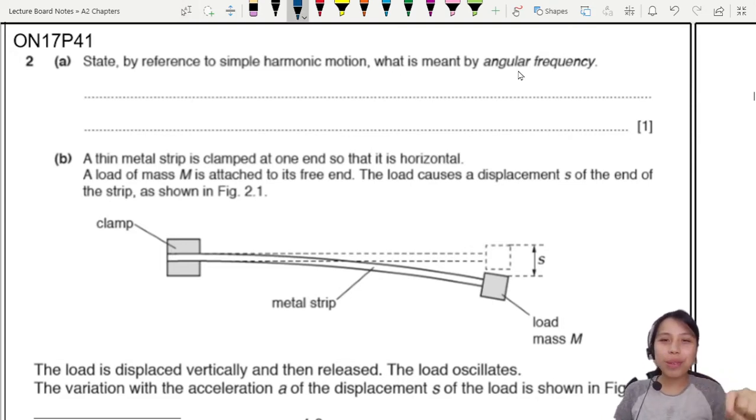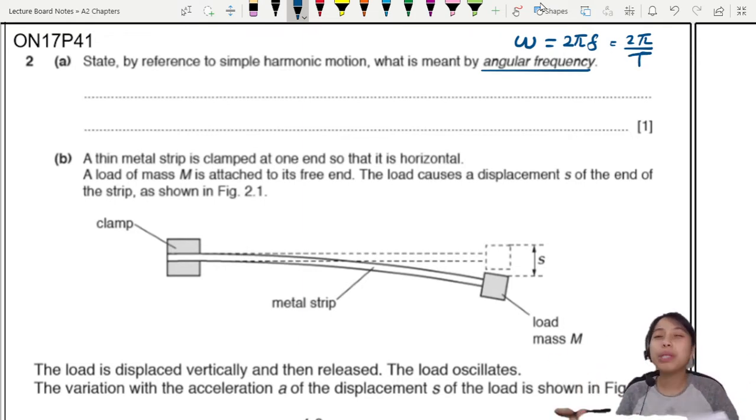This is an old friend we have seen before in circular motion. Angular frequency has the symbol omega. There's not exactly a word equation but there is an equation for this. It's not a word sentence, I meant that omega is 2πf or you can say 2π over T. Either one works.